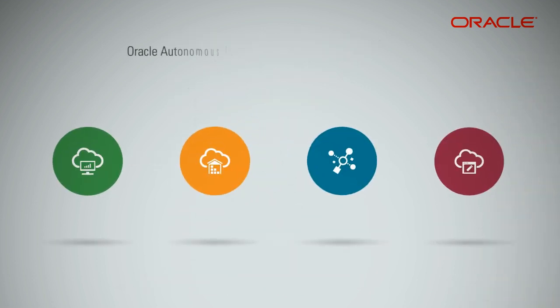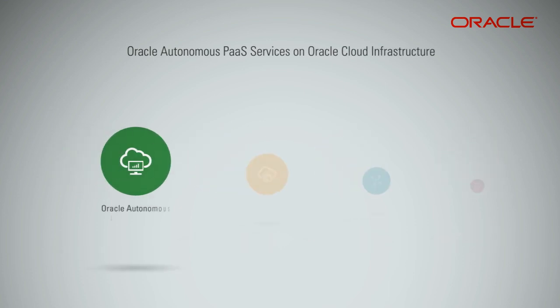Let us briefly look into the available Autonomous PaaS services. Oracle Autonomous Analytics Cloud combines machine learning, AI, and service automation to create an autonomous analytics platform that breaks down barriers between people, places, data, and systems, fundamentally changing the way you analyze, understand, and act on information.